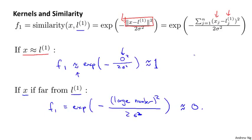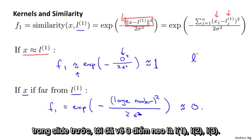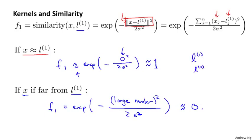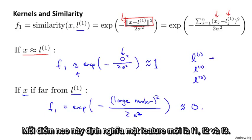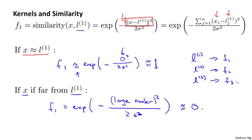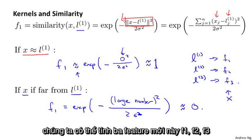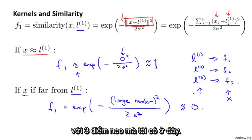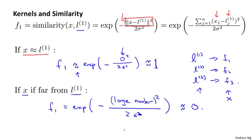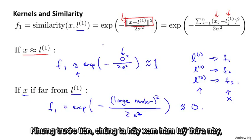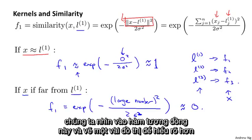So what these features do is measure how similar x is from one of your landmarks: the feature f is close to one when x is close to the landmark, and close to zero when x is far from it. Each of these landmarks — on the previous slide I drew three landmarks l one, l two, l three — each defines a new feature f one, f two, f three. Given the training example x, we can now compute three new features f one, f two, f three given those three landmarks.